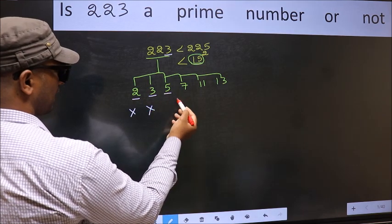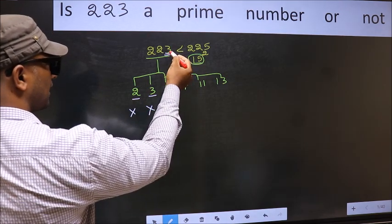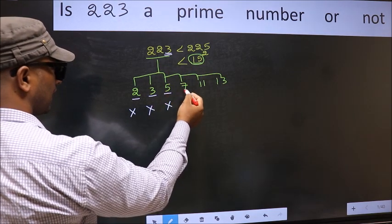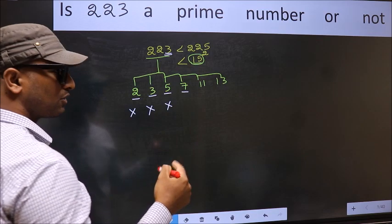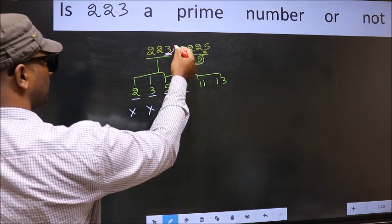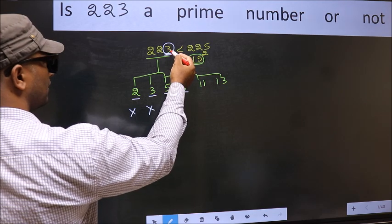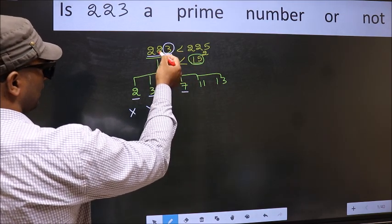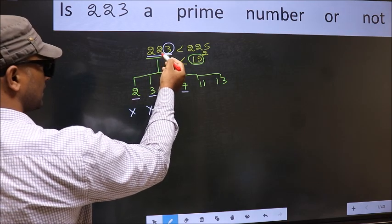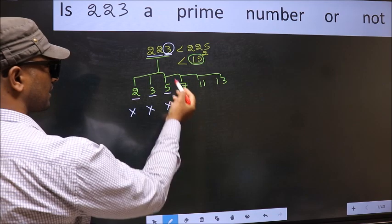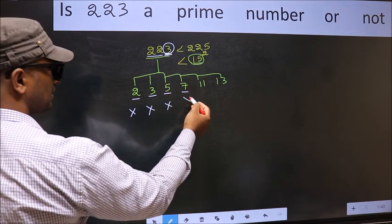Next number 5. Last digit is neither 0 nor 5 so this is not divisible by 5. Next number 7. To check divisibility by 7, double this 3 into 2, 6. Subtract from 22: 22 minus 6, 16. And 16 is not divisible by 7 so this number also not divisible by 7.